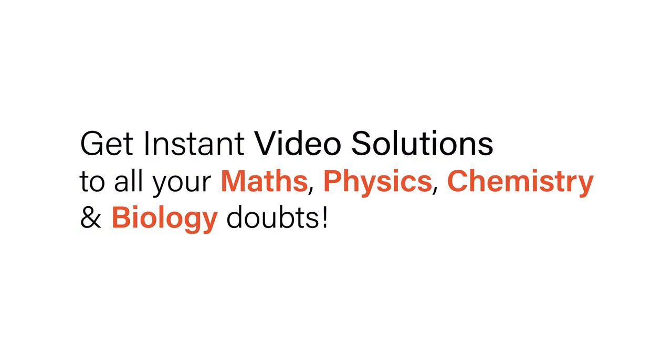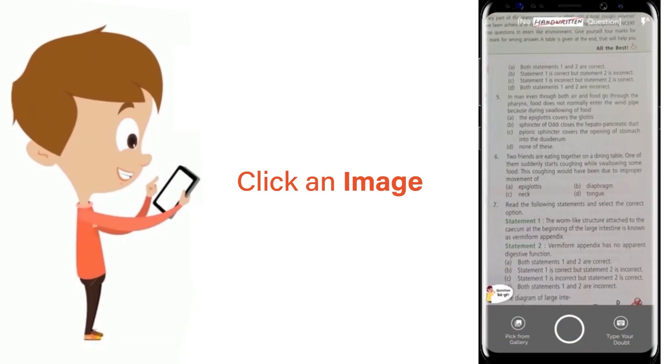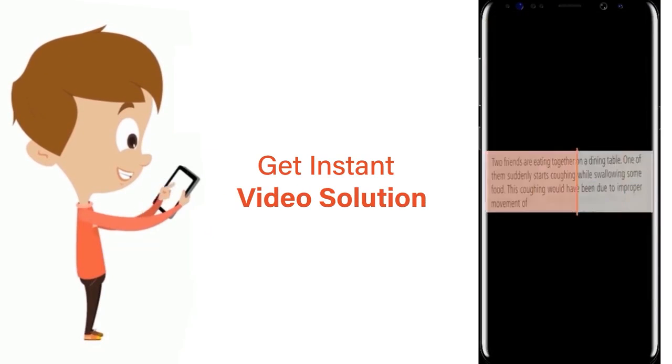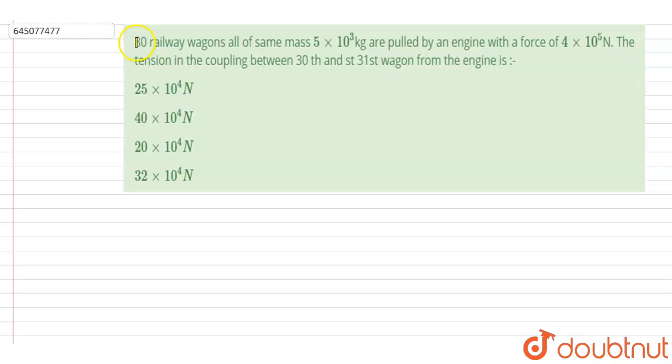With Doubtnet, get instant video solutions to all your maths, physics, chemistry, and biology doubts. Just click the image of the question, crop the question, and get instant video solution. Download Doubtnet app today. Hello everyone, 80 railway wagons all of same mass...